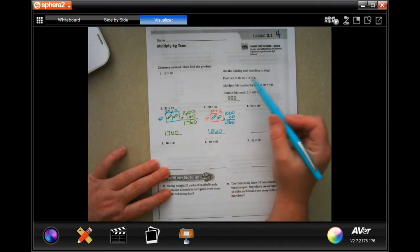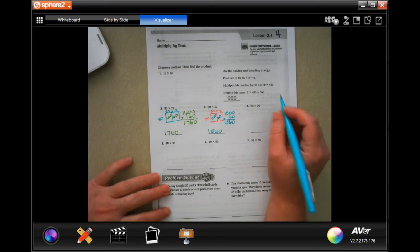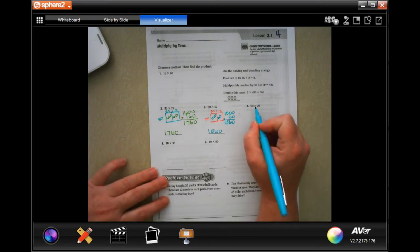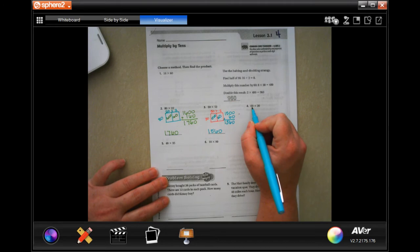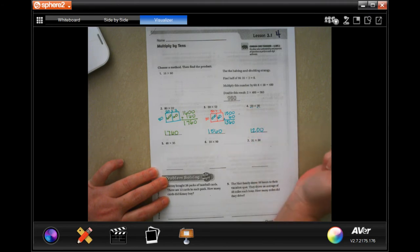Much easier than trying to halve and double mentally using mental math. Okay, so this one, actually, we're not even going to do a box. It's going to be super easy. Ready? 6 times 2, 12, and then 120. Boom, done.